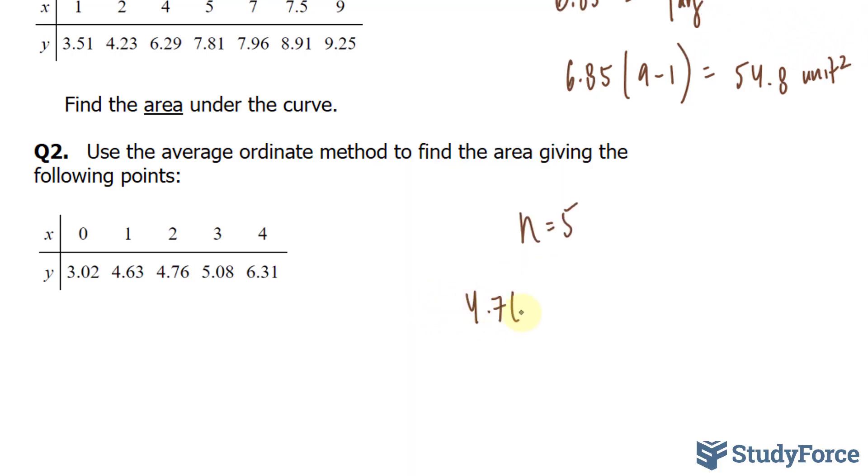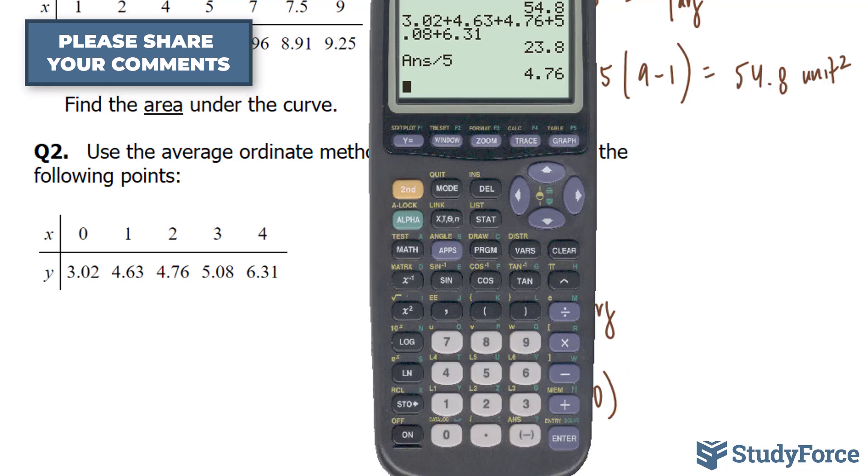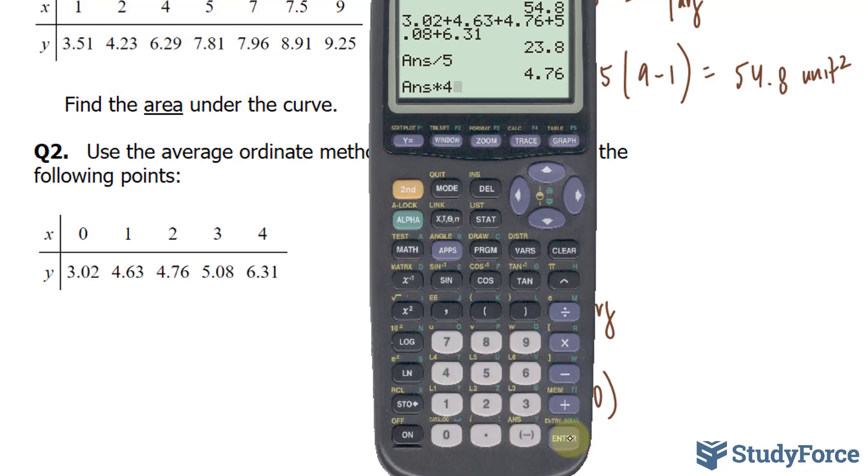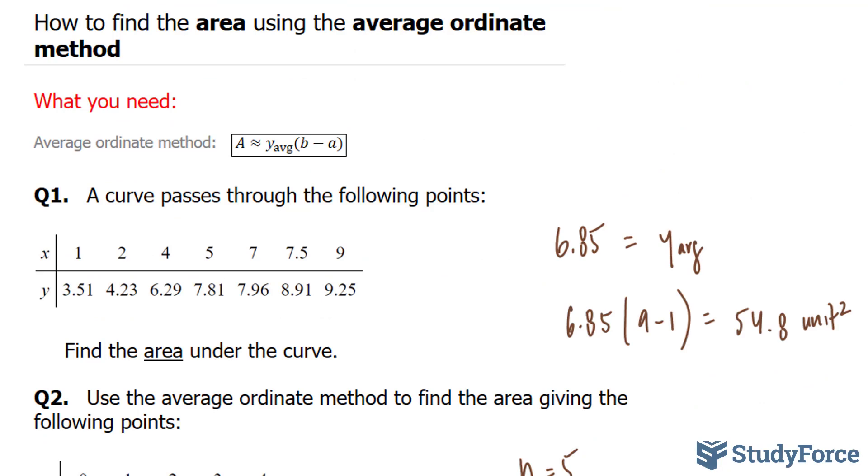4.76, this represents y average. Then I'll multiply 4.76 by 4 minus 0. So taking this number and multiplying it by 4, we end up with 19.04 units squared. And there you have it. That is how to find the area using the average ordinate method.